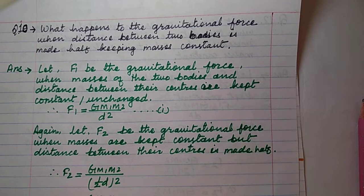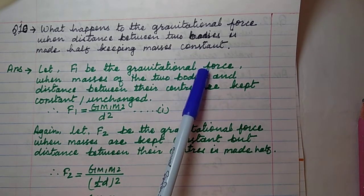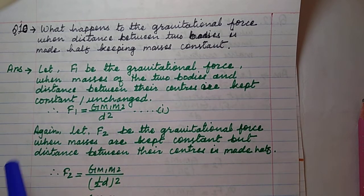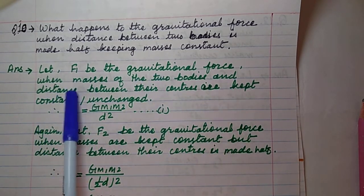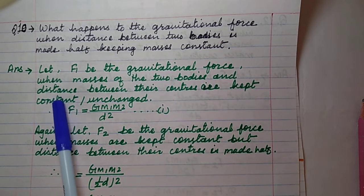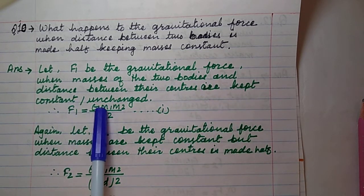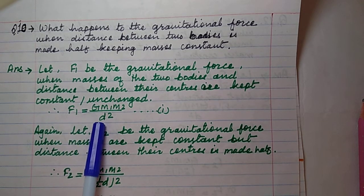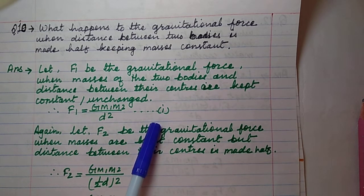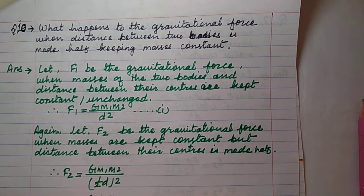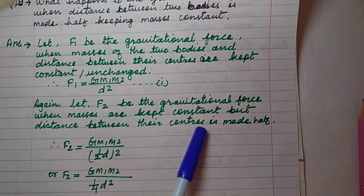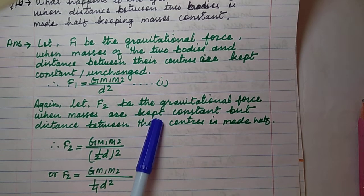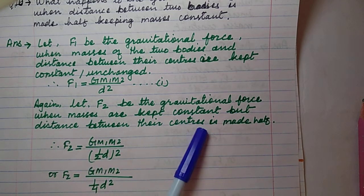What happens to the gravitational force when the distance between two bodies is made half, keeping masses constant? Masses are kept constant and distance is halved. Let F₁ be the gravitational force when masses and distance are unchanged: F₁ = Gm₁m₂/d² — equation 1. Now let F₂ be the gravitational force when masses are kept constant but distance is made half.